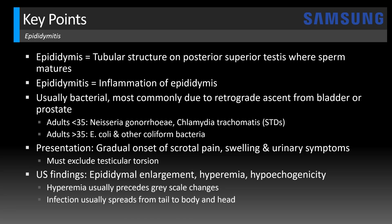Infection usually starts in the tail and then spreads to the body and the head. That's why in this case the vascularity of the body was much more pronounced than that in the head. And sometimes you can just have isolated tail involvement.